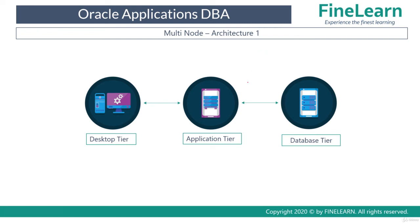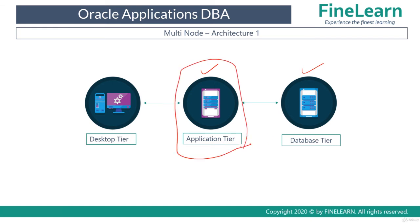In a multi-node architecture, two different systems or two different nodes are used. One node runs the application tier and one runs the database tier. You can also say that the application tier consists of only one node, or it spreads over only one node, and the database tier also has only one node.